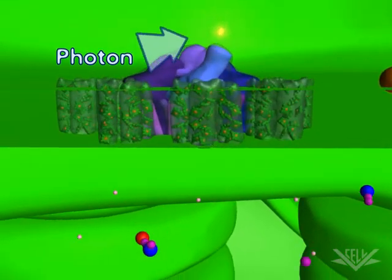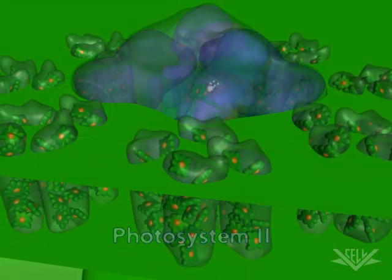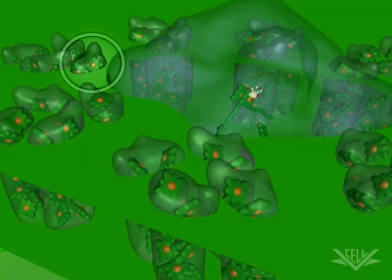First, a photon of light hits a chlorophyll molecule surrounding the photosystem II complex. This creates resonance energy that is transferred through neighboring chlorophyll molecules.